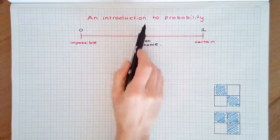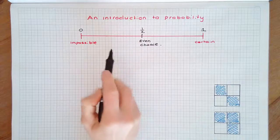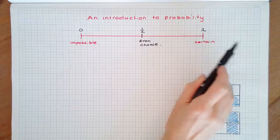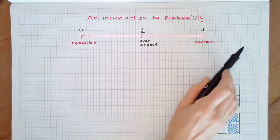Probabilities are written as fractions, decimals, and less often as percentages between 0 and 1. Numbers greater than 1 cannot be used to describe probabilities.